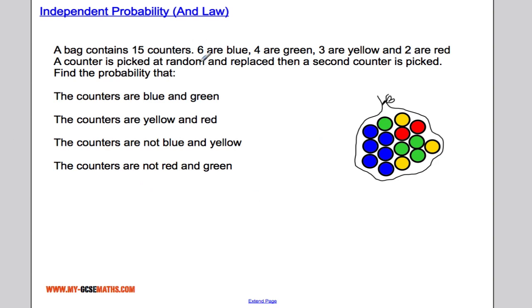Let's look at a more complicated example. A bag contains 15 counters: 6 blue, 4 green, 3 yellow, and 2 red. A counter is picked at random and replaced, then a second counter is picked. We need to find the probability for various outcomes. First, I'll write down the probability of each color individually.